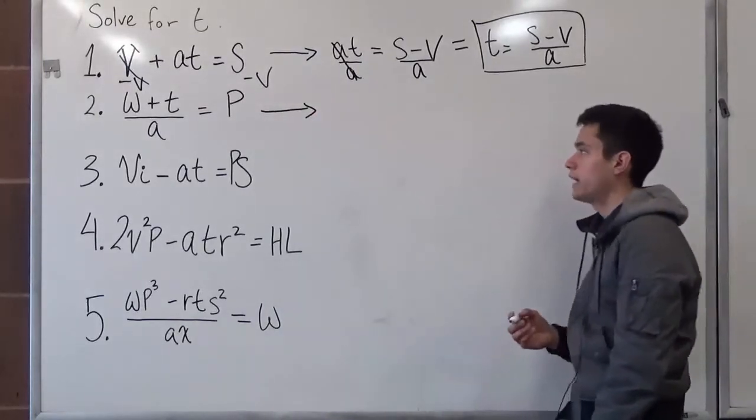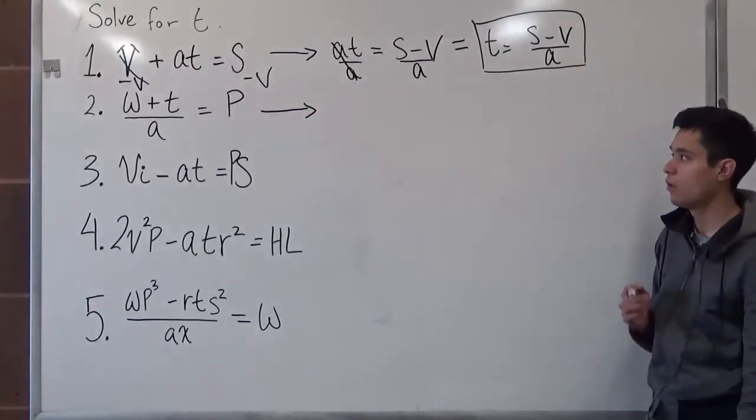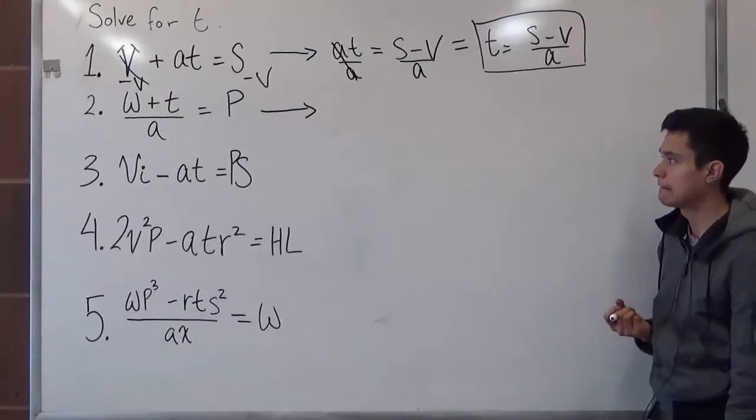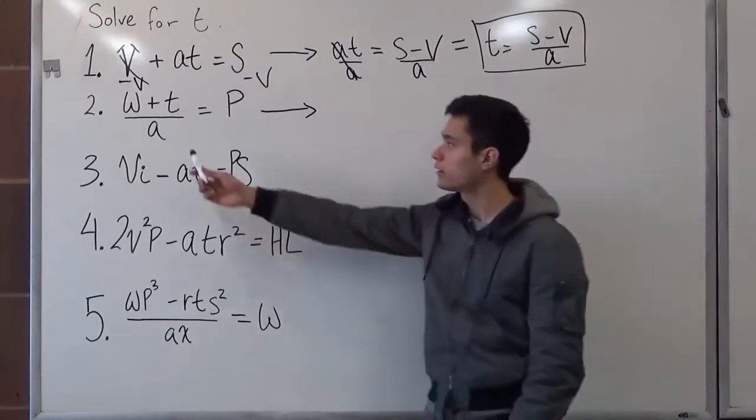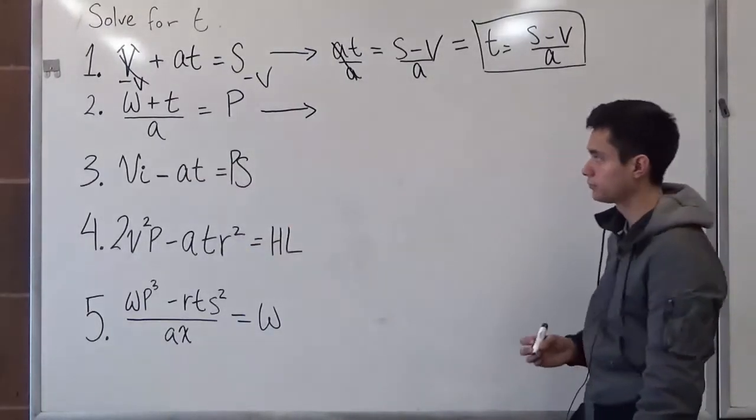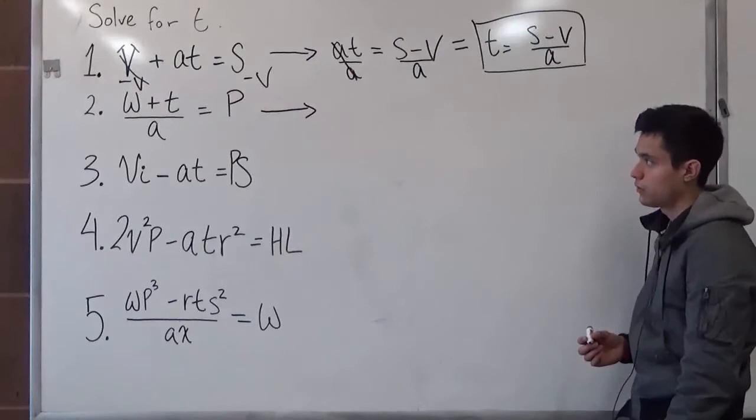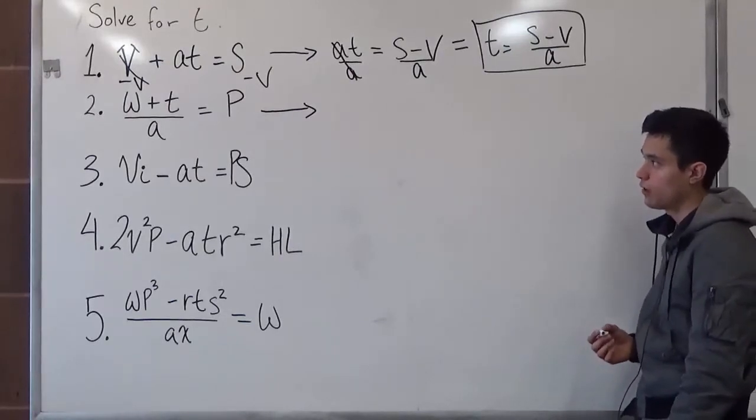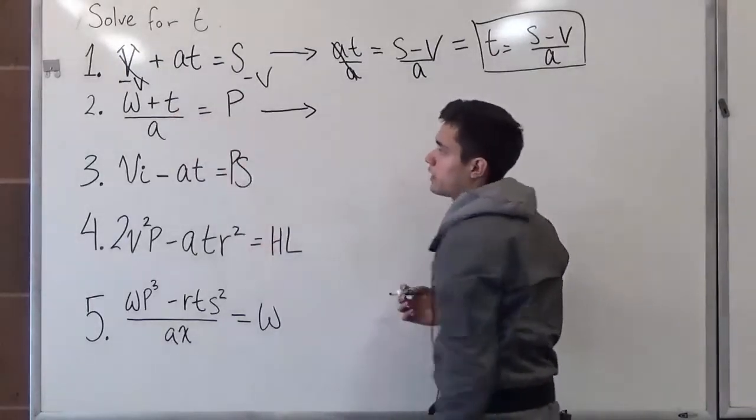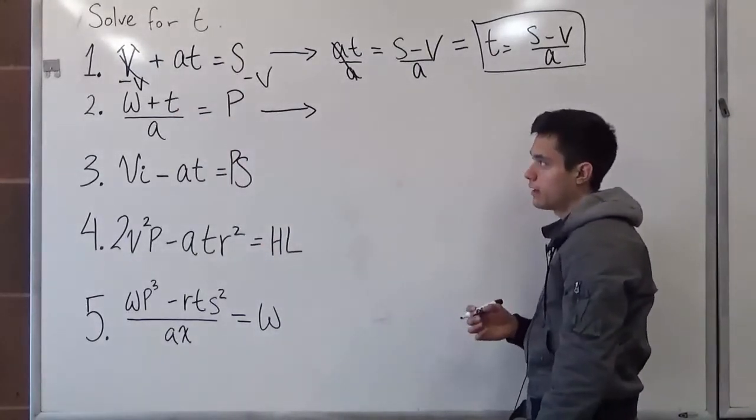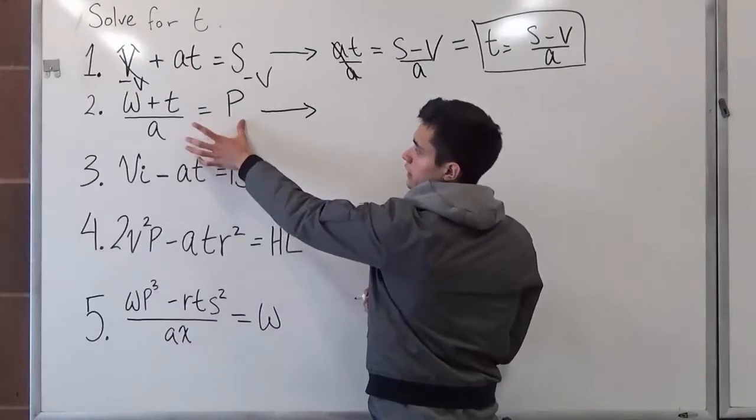In problem number two, we have w plus t over a is equal to p. So this is going to be a little bit trickier, because we have a denominator, and our denominator is a. So first and foremost, we want to move, as we always know, we want to get t on one side. But in order to do that, we have to move this denominator on this side.